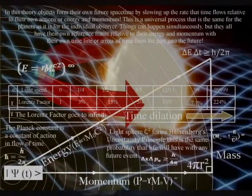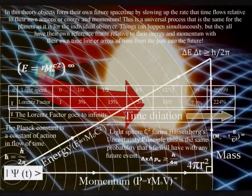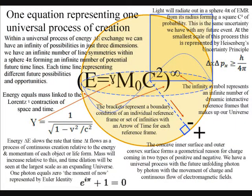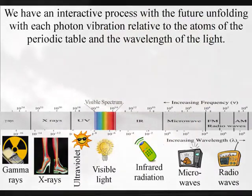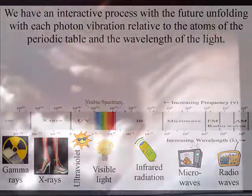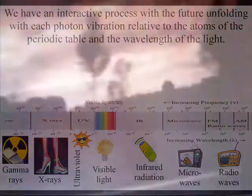In physics, spacetime is any mathematical model that combines dimensions of space and time in a single continuum. This geometrical process can be represented by just one equation, with the Lorentz contraction of space and time being placed between the energy and mass of Einstein's famous equation. This represents a universal process of continuous energy exchange or continuous creation, with the future unfolding photon by photon relative to the energy of each object or life form.